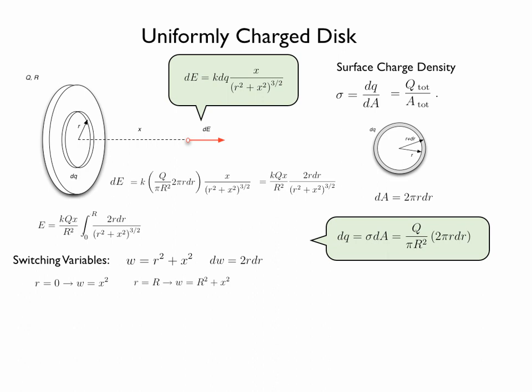When the radius of the ring equals the radius of the disk, the new variable w must be equal to big R squared plus x squared.